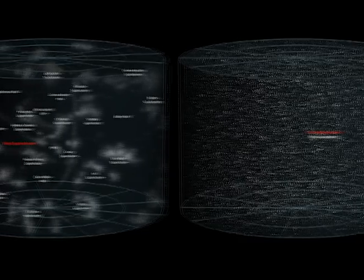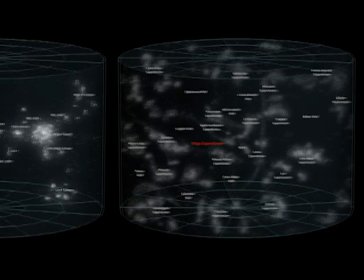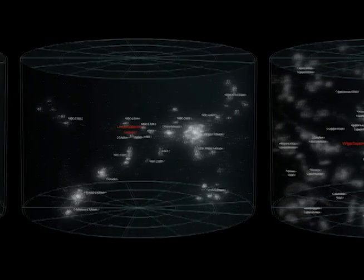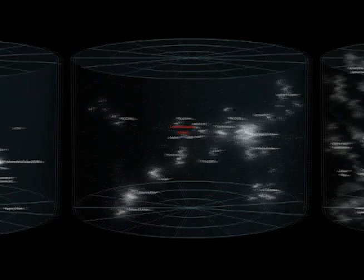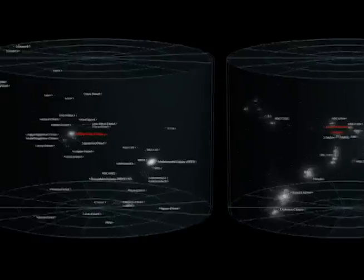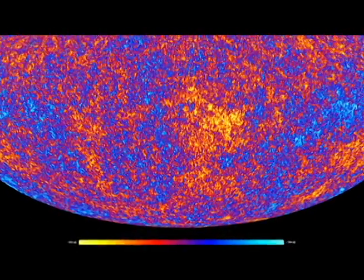The observable universe is about 93 billion light years across. That means in any direction from Earth, we can see objects as far as 47 billion light years away.